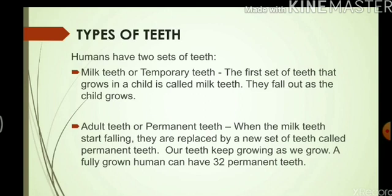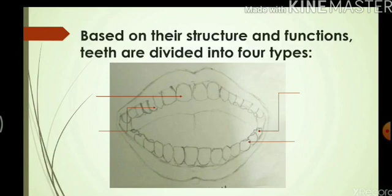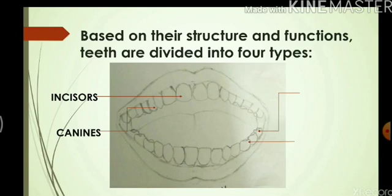A fully grown human can have 32 permanent teeth or less than that. Here in this diagram, you can see the different types of teeth inside our mouth. There are four different types of teeth based on their structure and function. The first type is called incisors — the first four teeth in the front. Next we have canines, then premolars, and after that towards the end of our jaw we have molars.